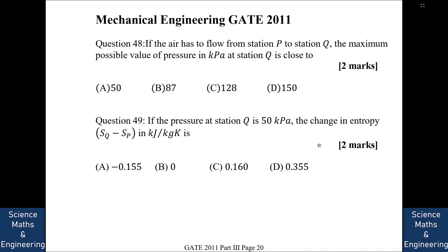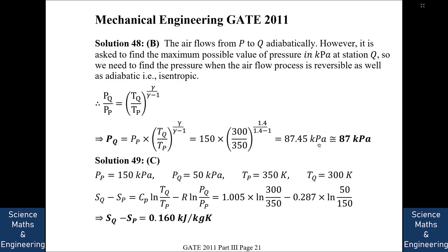For the second part, pressure at Q is given as 50 kPa. Temperature at P is 350 K, at Q is 300 K. The change in entropy SQ − SP = Cp·ln(TQ/TP) − R·ln(PQ/PP), giving a change in entropy of 0.160 kJ/kg·K.